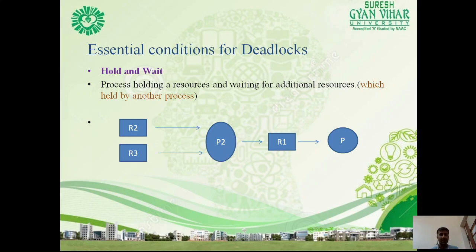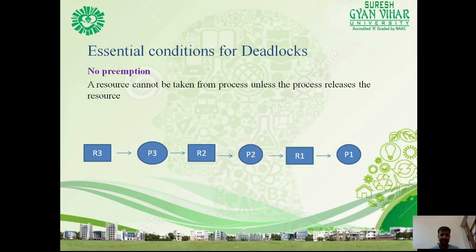The second essential condition is hold and wait — a process is holding a resource and waiting for an additional resource held by another process. For example, P2 holds R2 and R3 but requires R1, which is held by P1. Since P2 holds R2 and R3 and P1 holds R1, neither can proceed — this is the hold and wait situation.